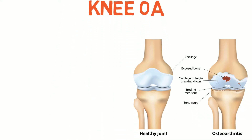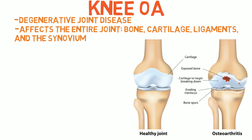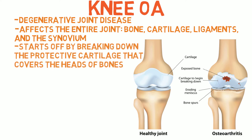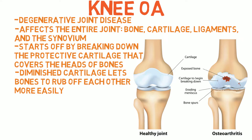You may have heard OA referred to as degenerative joint disease as it affects the entire joint, including structures such as the bone, cartilage, ligaments and synovium. Yet it often starts by breaking down the protective cartilage that covers the heads of bones and changing what's underneath, gradually spreading and impacting the other structures over time. The diminished cartilage is an issue because when this happens it lets the bones within the joint rub off each other more easily, and can simultaneously grow abnormal spurs.